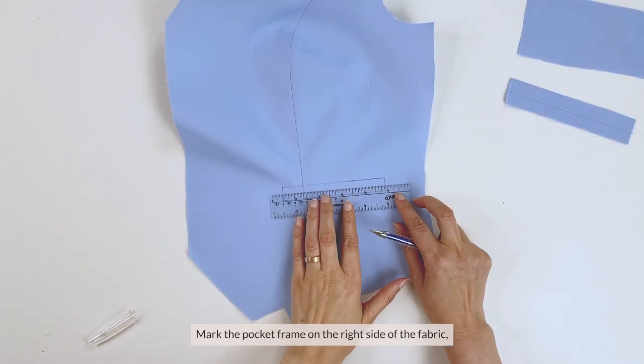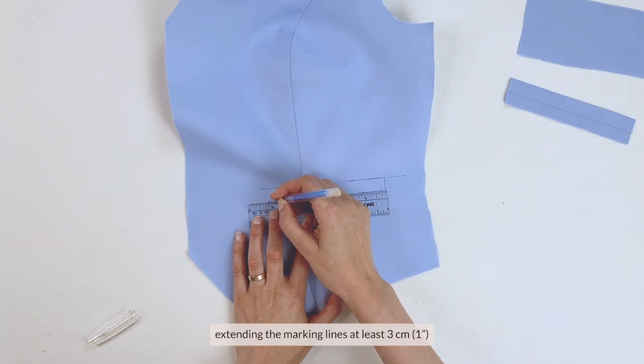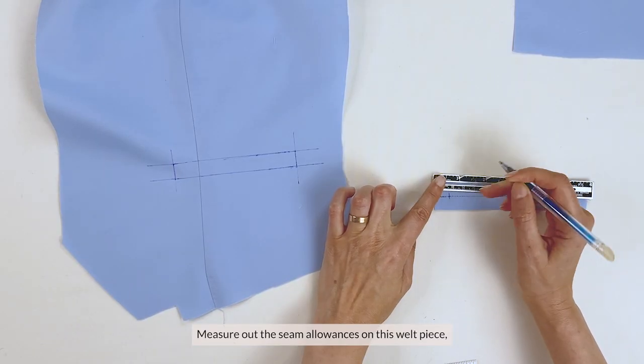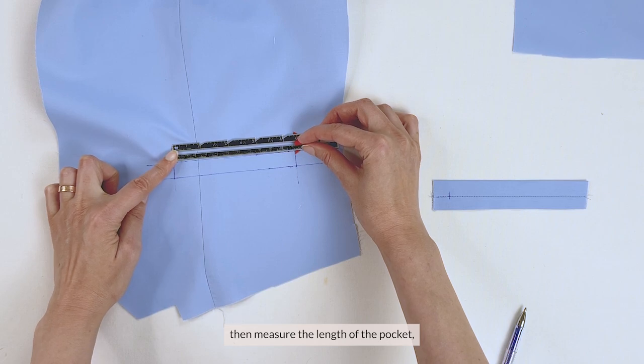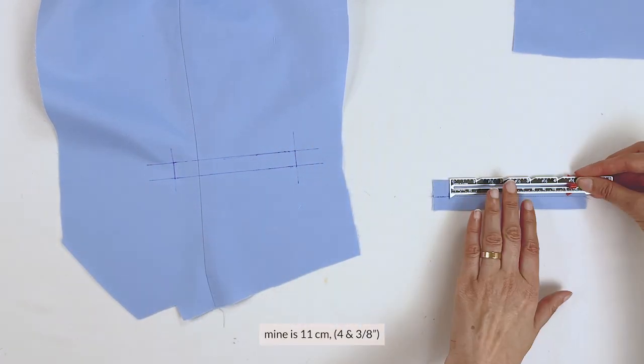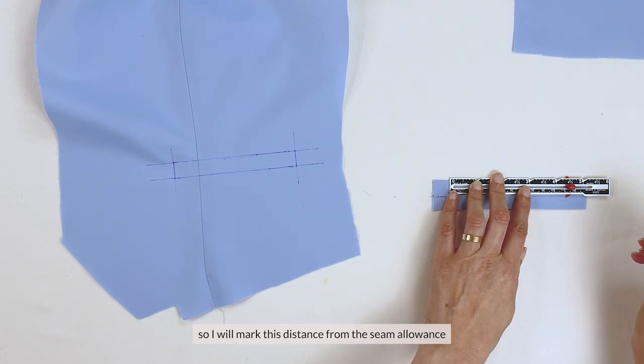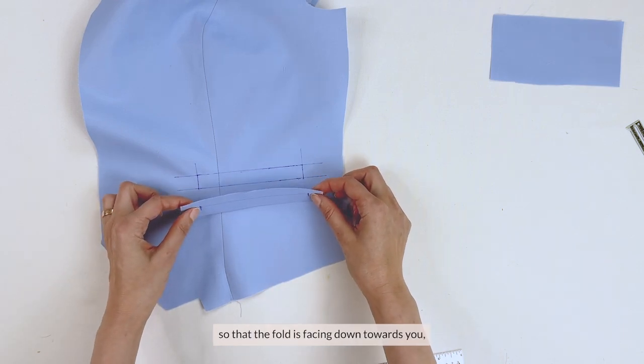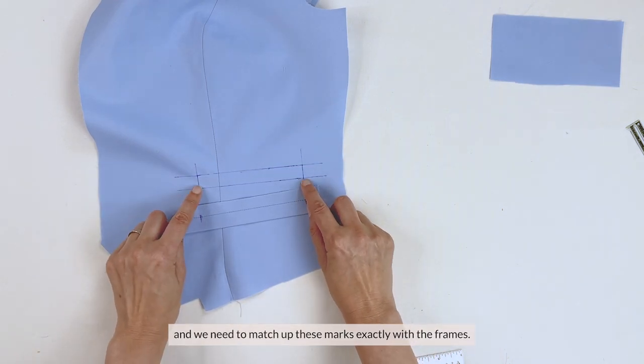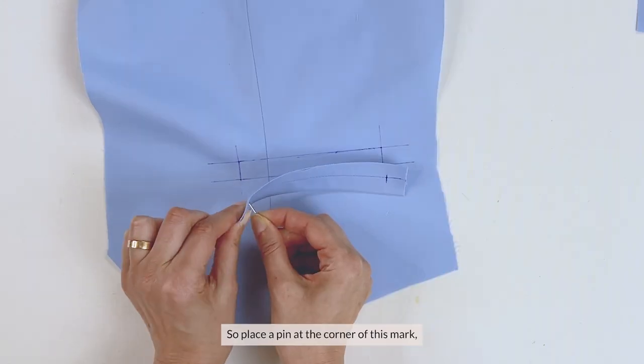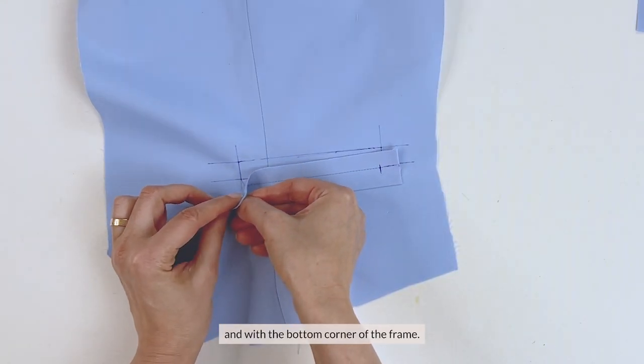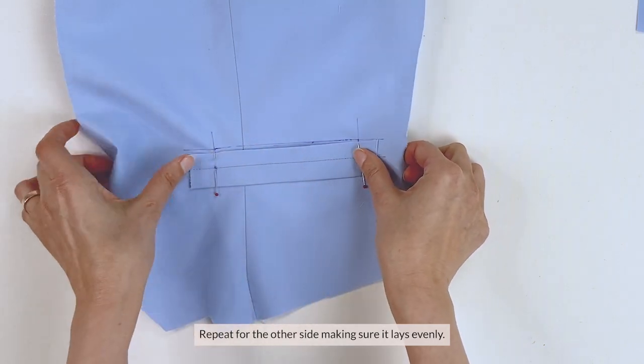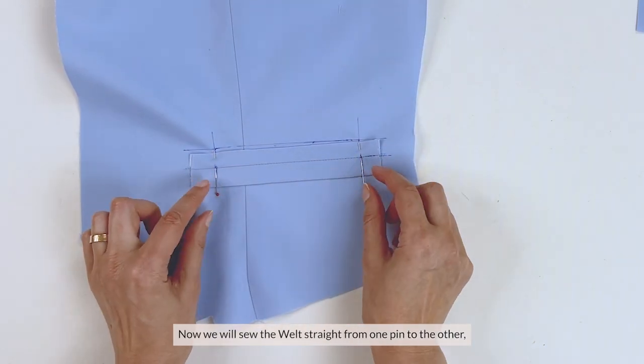Mark the pocket frame on the right side of the fabric, extending the marking lines at least 3cm, or an inch, past the frame all around. Measure out the seam allowances on this welt piece, again around 1.5cm, then measure the length of the pocket, mine is 11cm, 4 and 3 eighths of an inch, so I'm going to mark this distance from the seam allowance on the welt at the stay stitch line. Flip the welt piece around so that the fold is facing down towards you, and we're going to match these marks up exactly with the frames. So place a pin at the corner of this mark, and match it with the bottom corner of the frame. Repeat for the other side, making sure it lays evenly.